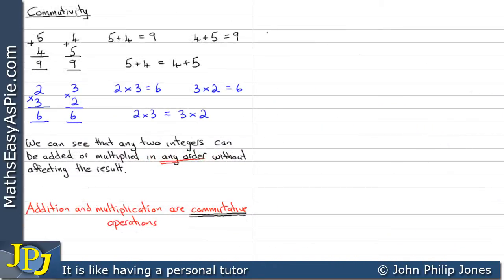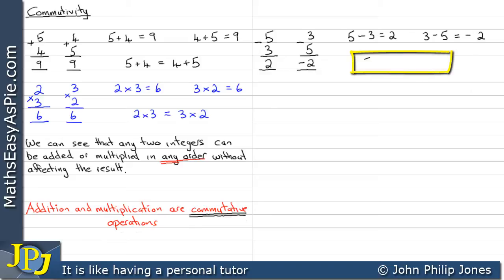Let's consider the following example. Five minus three is two. We swap these round so we have three minus five, and we get minus two. So five minus three is two whereas three minus five is minus two. Therefore five minus three cannot be equal to three minus five.